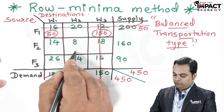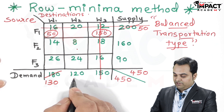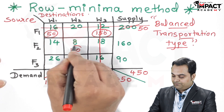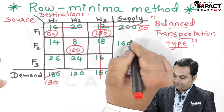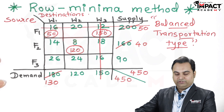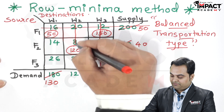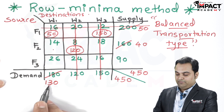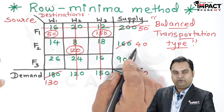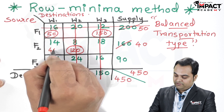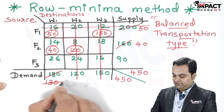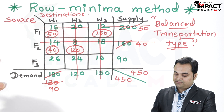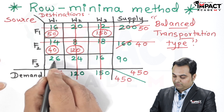In the second row, we select the minimum value. Out of 14 and 8, the minimum is 8. The demand is 120 and the supply is 160, so 120 is allocated here and the demand is completely met. Subtracting 120 from 160 leaves 40. Since the demand is met, that column is cancelled. Now 14 remains — the demand is 130 but supply is only 40, so 40 is allocated, leaving a remaining demand of 90. This row is then cancelled.